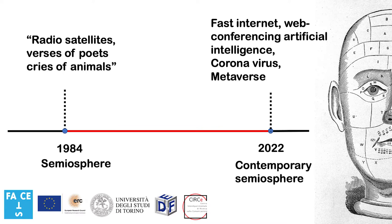Thirty-eight years have passed since the publication of Lotman's pivotal article and since then the contemporary semiosphere has grown. Whilst in the 1980s it comprised radio satellites, the verses of poets, and the cries of animals, today the semiosphere encompasses fast internet, web conferencing, coronavirus, artificial intelligence, and even virtual worlds like the metaverse.